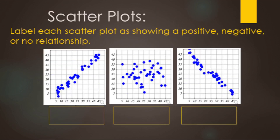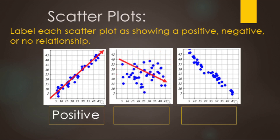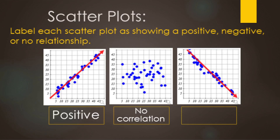Scatter plots look different depending on the data. We look at whether they show a positive, negative, or no relationship. From left to right, if the data goes up, that's a positive relationship. If the data doesn't really have a direction, we call that no relationship or no correlation. And if the data trends down from left to right, that's a negative relationship or negative correlation.